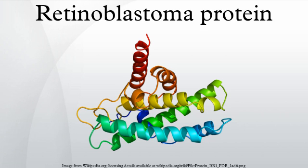Rb is phosphorylated to PRB by certain cyclin-dependent kinases. PRB is described as being hyperphosphorylated, and when in this state it is unable to complex E2F and therefore unable to restrict progression from the G1 phase to the S phase of the cell cycle. During the M to G1 transition, PRB is progressively dephosphorylated by PP1, returning to its growth suppressive state. When it is time for a cell to enter S phase, complexes of cyclin-dependent kinases and cyclins phosphorylate Rb to PRB, inhibiting its activity.